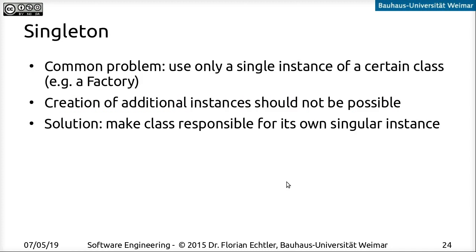So first of all, the singleton — this is maybe the most common design pattern. The problem is that for specific types of classes, you want to make sure that there is only one instance of that class, so that there is only ever one object that other parts of the program will share, and that you can't create additional instances. For example, you might have a hardware abstraction like a camera device, and only one driver for that camera can exist. If you create a second one, you will get all sorts of race conditions and access collisions on the hardware.